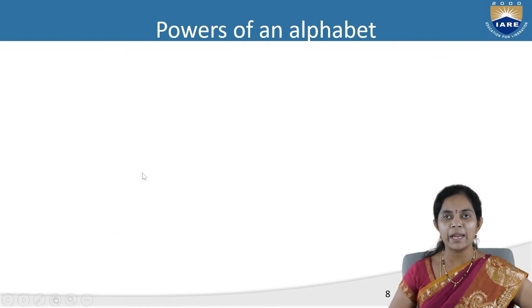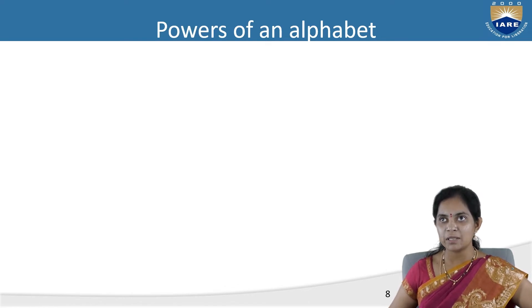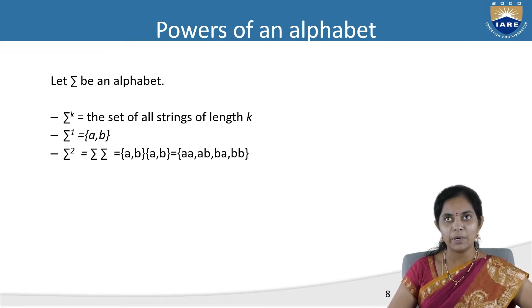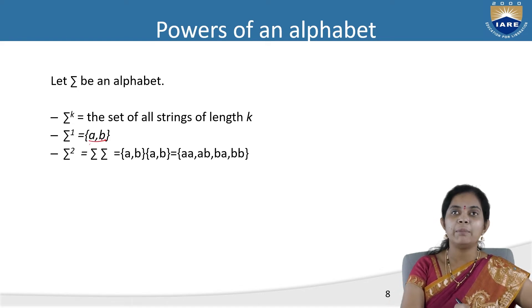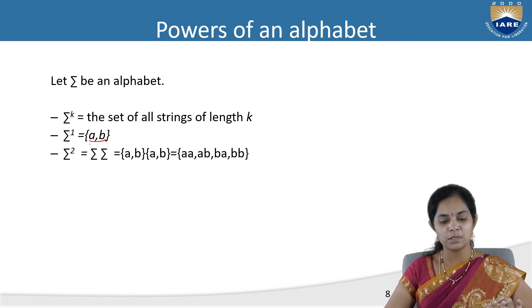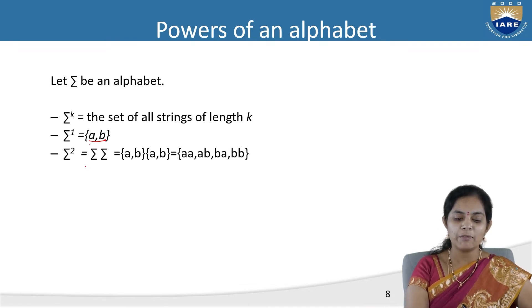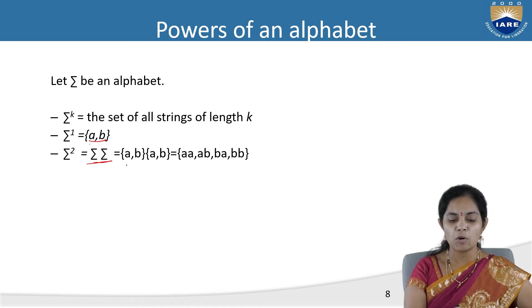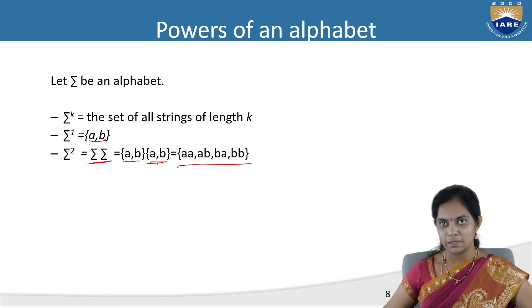The power of an alphabet: let sigma be the alphabet. Σ^k is the set of all strings of length k. For example, with alphabets a and b: Σ^1 = {a, b}, and Σ^2 is the concatenation sigma·sigma — the combinations are aa, ab, ba, bb — four possibilities. Sigma star (Σ*) contains the empty string plus strings of one alphabet, two alphabets, and so on, going on infinitely.